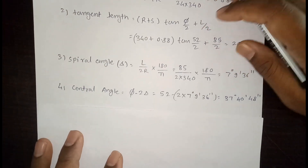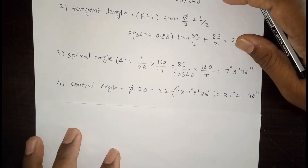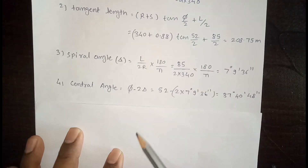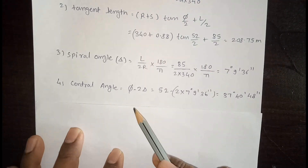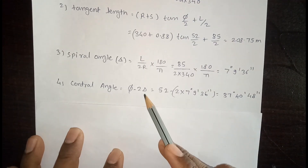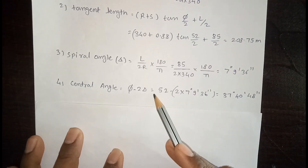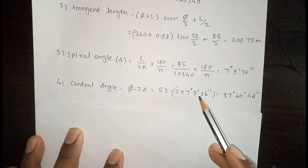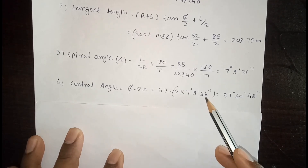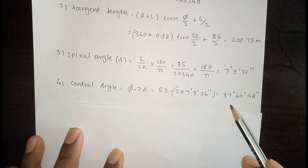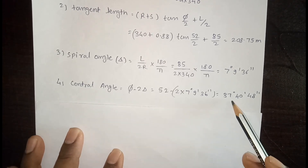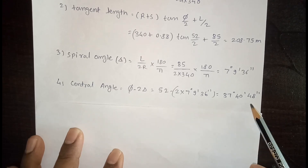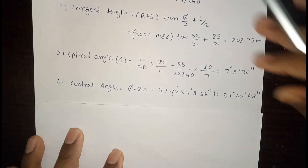After calculating the spiral angle, we calculate the central angle. The formula for the central angle is: φ − 2δ. Here φ = 52° and δ = 7° 9' 36". So the central angle is 37° 40' 48".